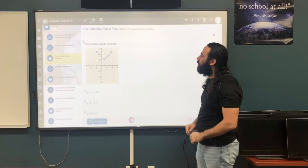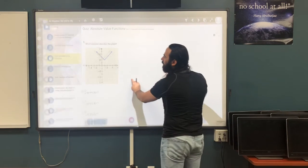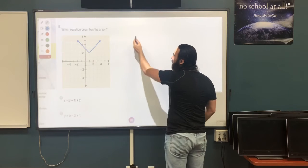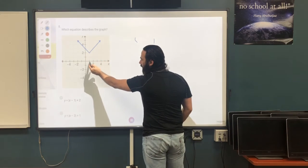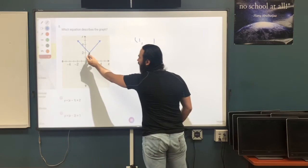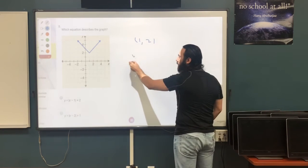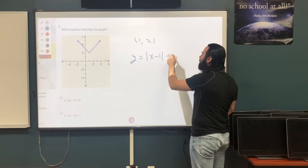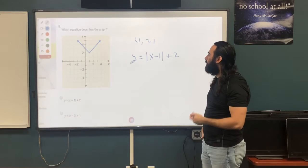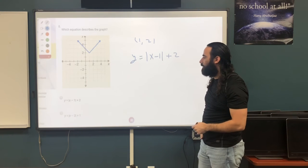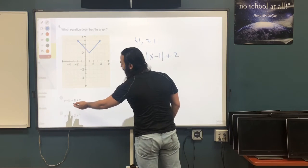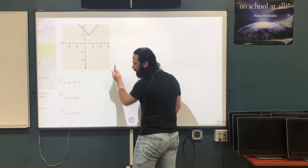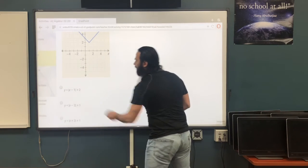Question 8: which equation describes the graph? The vertex is at x equals 1 and y equals 2. So the equation is y equals the absolute value of x minus 1 — remember to take the opposite — plus 2. Looking at the answer choices, the first one is the absolute value of x minus 1 plus 2. That is the correct answer.